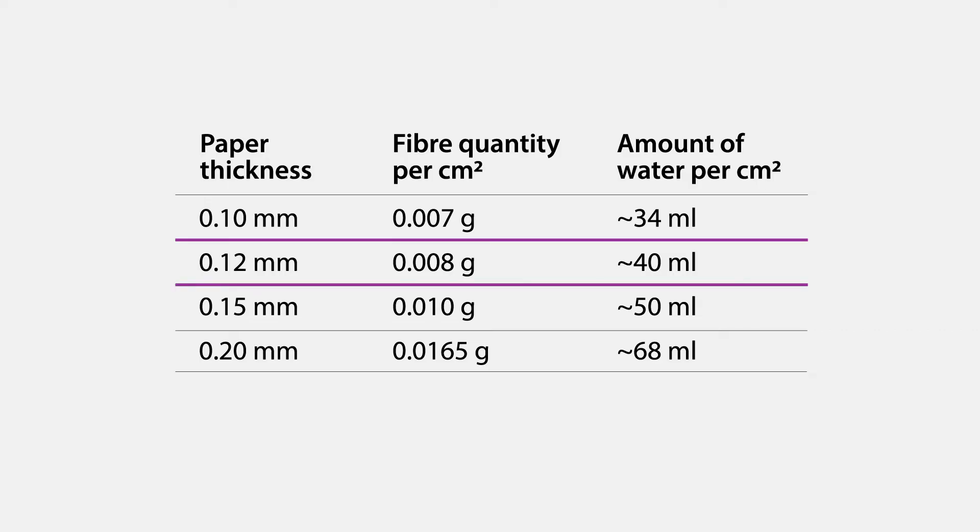For a sheet of paper that is 0.12 mm thick, you will need approximately 0.008 grams of fibers per square centimeter. This overview offers a rough guide for other types of paper.